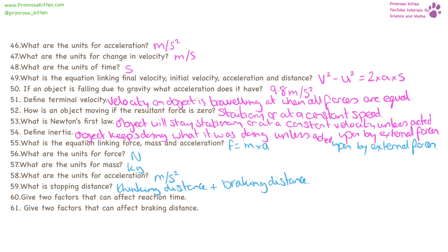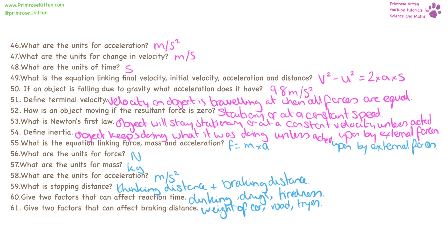Stopping distance is thinking distance — or reaction time — plus braking distance. It is the time from when you see an object in the road to when your car actually stops. Two factors that can affect reaction time are drinking alcohol, drugs, and tiredness. Remember to say whether this has a positive or negative effect — some illegal drugs make you feel drowsy and have a negative effect, whereas caffeine is a drug that will actually increase your reaction time. Two factors that can affect braking distance are the weight of the car, the condition of the road, and the tyres — again, be clear about the positive or negative effect.